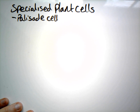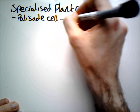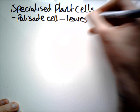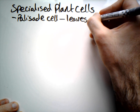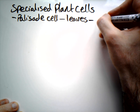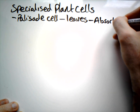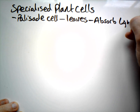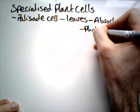Let's talk about specialised plant cells and palisade cells. Palisade cells are going to be found predominantly in the leaves or any green part of the plant, because they absorb sunlight for a process called photosynthesis.